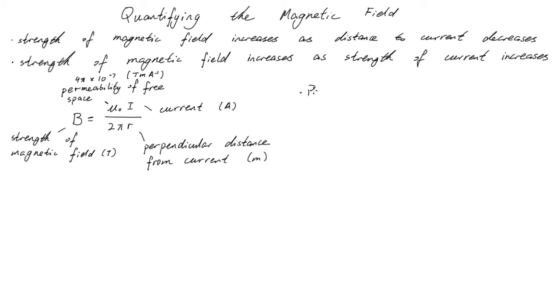The formula shows the strength of the magnetic field increasing as the strength of the current increases. This fits with our expectations from the experiment. The magnetic field strength also increases as distance from current decreases, which also fits with the experiment. So this formula behaves the way we want it to.